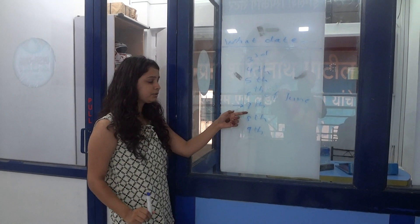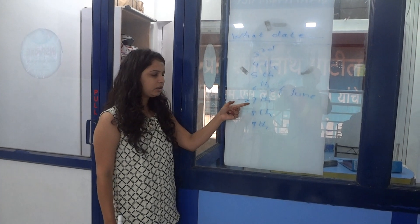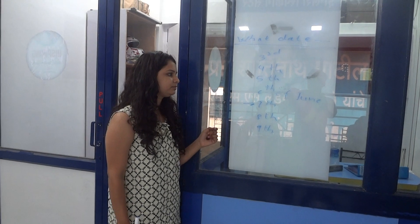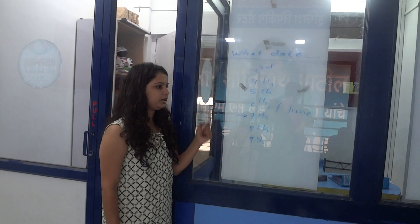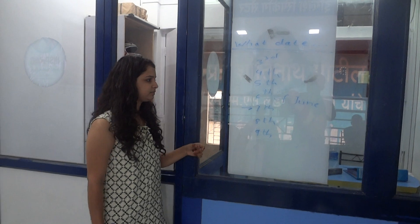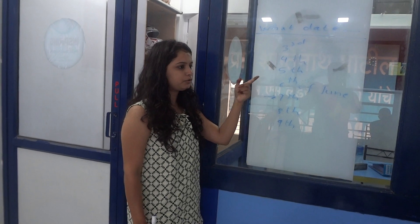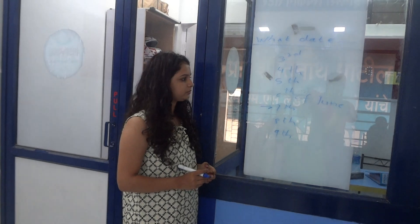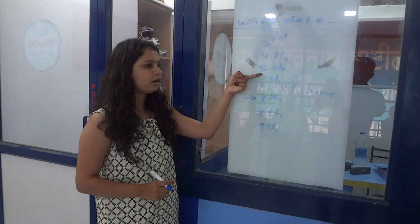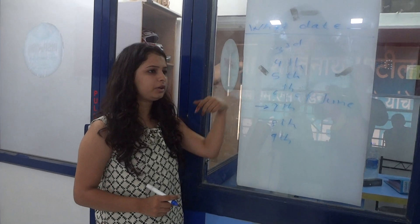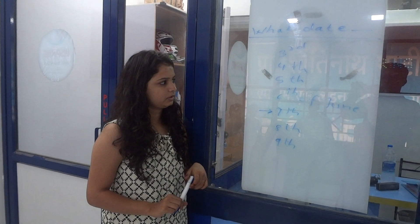What date is today? It is 7th of June today. What date was yesterday? It was 6th of June yesterday. What date was the day before yesterday?